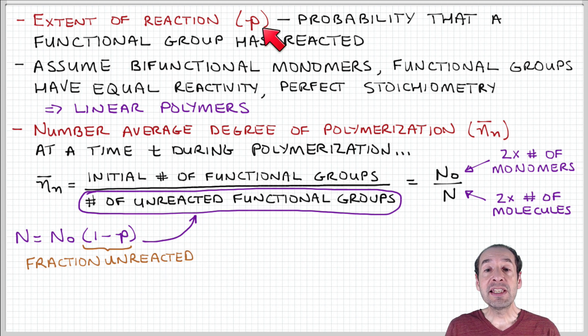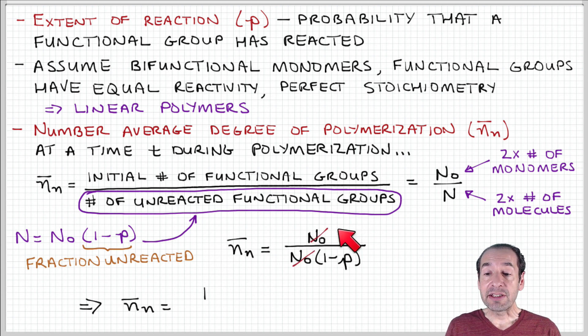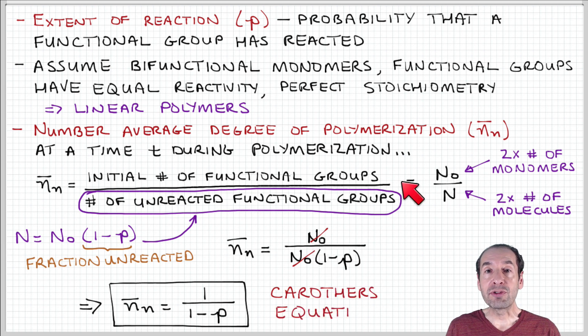Notice that p is the probability that a functional group has reacted, so 1 minus p is the probability that a functional group has not yet experienced a reaction. We can substitute this in and cancel out the initial number of functional groups that are present in the sample, and we end up with this relationship that the number average degree of polymerization is equal to 1 over 1 minus p.